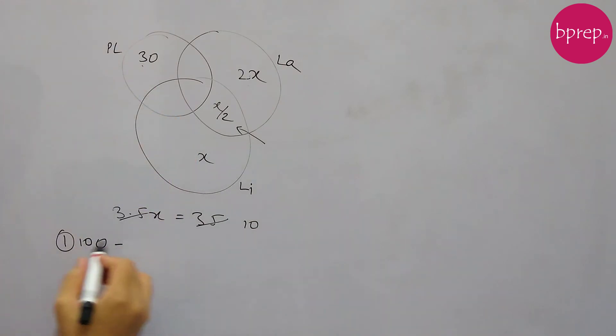So out of total hundred schools who is having none of this facility, schools those are having at least one thing we can subtract from 100. 30 schools are having playground, and x is 10, so 20 schools are having laboratory and 10 schools are having library and 5 schools are having both. So minus 5, so this is 35 and 65, so 100 minus 65 is 35. So there are 35 schools which had none of these three.